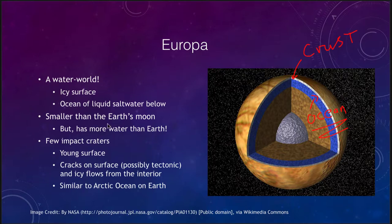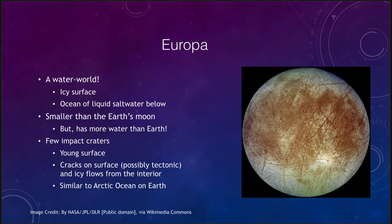Europa is actually smaller than the Earth's moon but has more water than the Earth. If we take all of the water in the ice and in the liquid water below and compare it to the Earth, we find that it is more water than all the oceans, ice caps, lakes, and rivers here on Earth. It has very few impact craters, which means the surface is very young. We also see some possible tectonic features — some of these cracks may be tectonic and there is some kind of plate activity on Europa that is being studied.